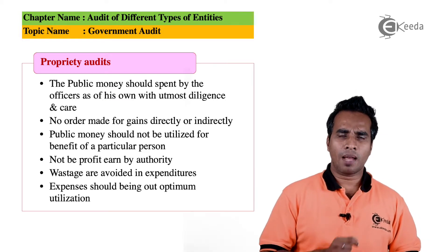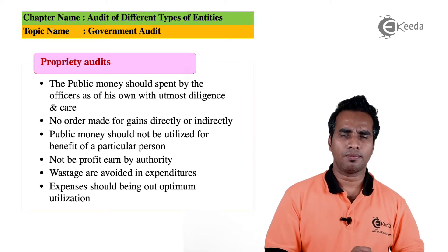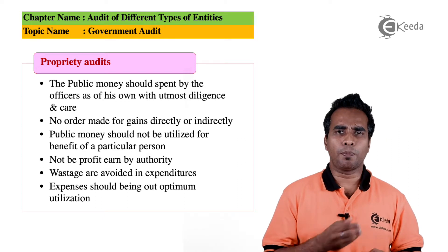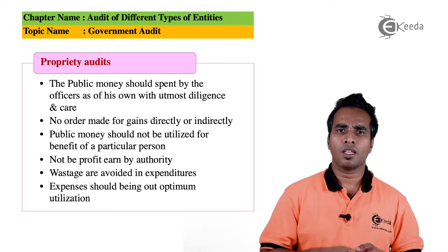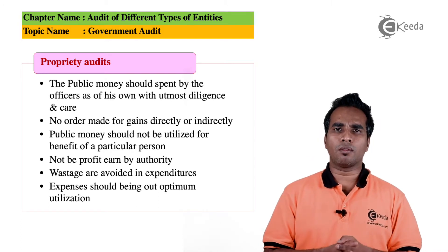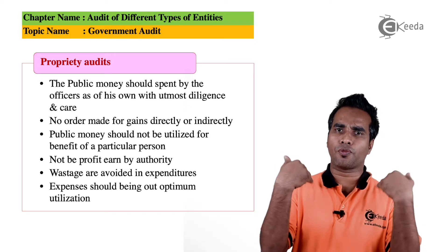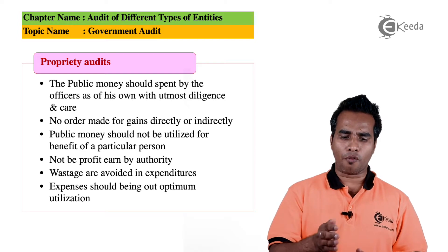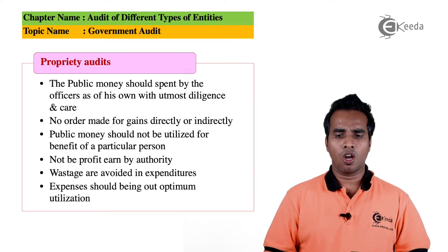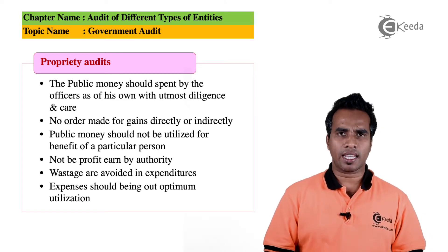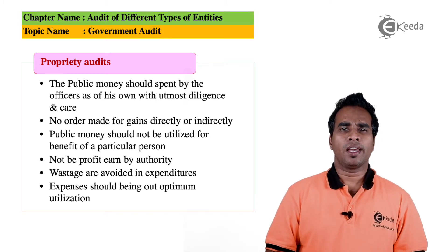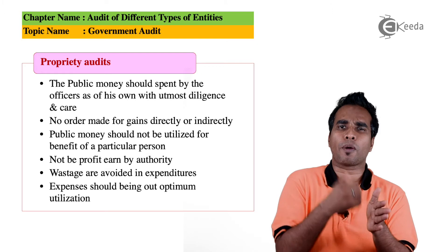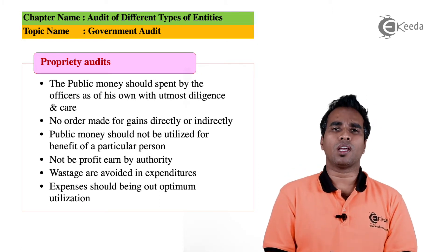Next is Proprietary Audit — examining whether government expenditure is proper, identifying waste of public money, ensuring no orders are made for the direct benefit of a third party. Public money must be properly utilised, personal profit must not be generated, wastage must be avoided, and expenses should be optimum. Finally, Performance Audit checks whether government programs achieve their intended results.